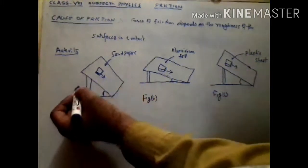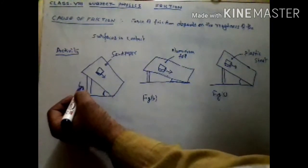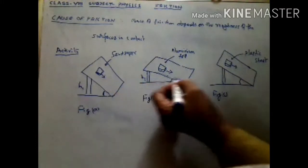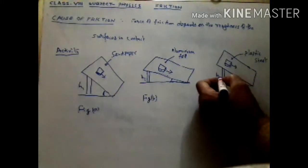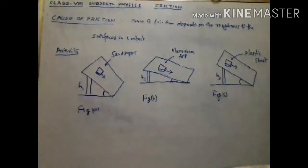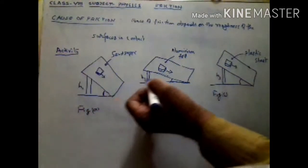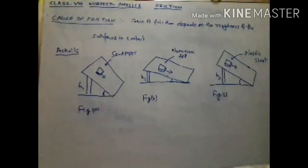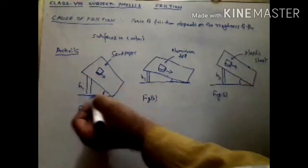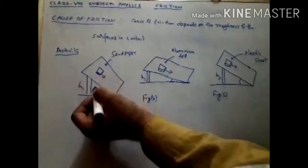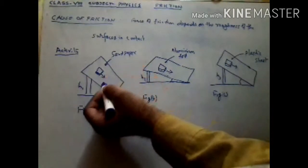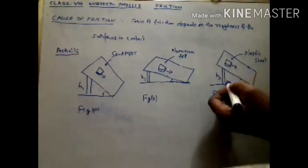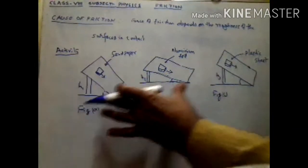Now you see that the height of the first one is H1, height of the second is H2, and height of the third is H3. The inclination is lowest for the aluminium foil, and the inclination is most for the sandpaper. For the plastic sheet it is in between the two cases.